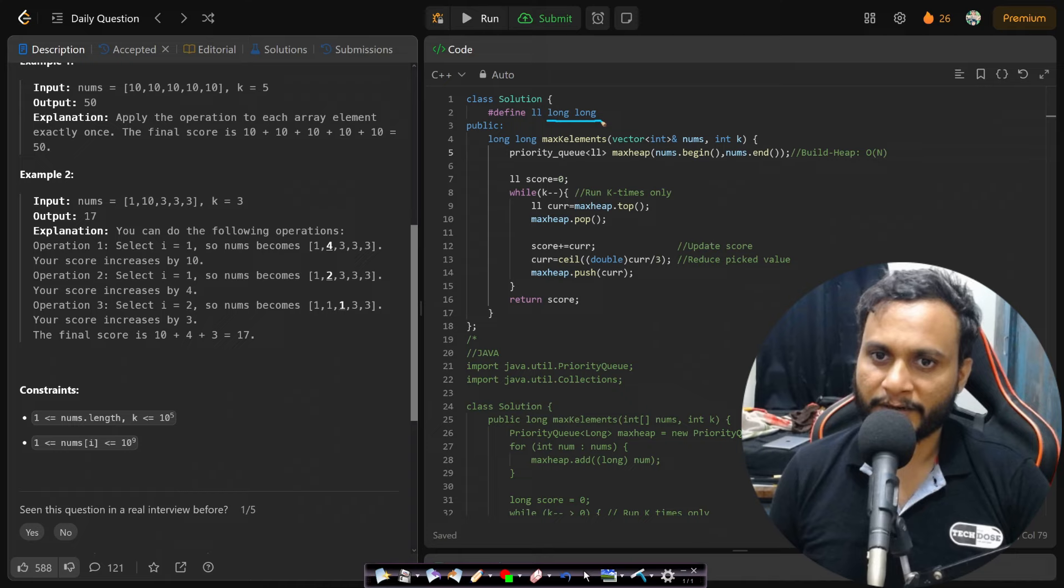I had already explained why we are defining long long, because this will be outside of 32-bit integer. We are building the heap here which is order of n, and I will be initializing the score value with the long long integer. I will be repeating the process k times and every time I will be picking the max value from the heap.